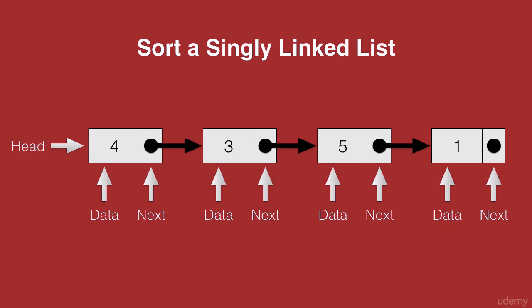We want to sort this singly linked list in ascending order such that our singly linked list finally looks like this, with 1 as the head node followed by 3, 4, and finally the greatest value 5.